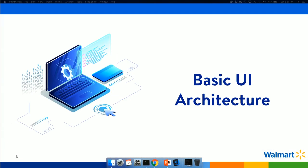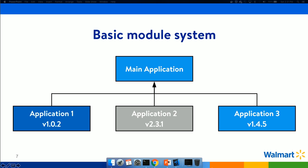Let's start with the basic architecture that we followed. As you can see, there is a main application and then you have child applications 1, 2, and 3. These child applications are npm modules, and these modules are added as a dependency to the main application. Application 1 is at version 1.0.2 while application 3 is at version 1.4.5, because these applications are built by different teams and come inside the main hosting portal.